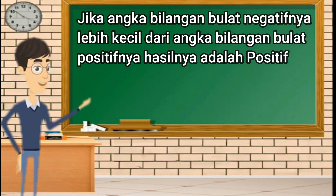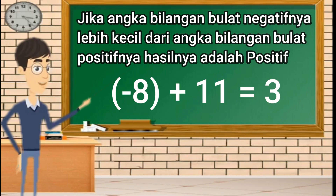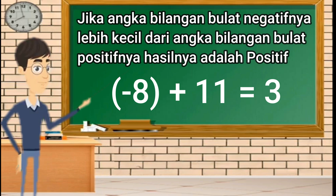Jika angka bilangan bulat negatifnya lebih besar dari angka bilangan bulat positifnya, hasilnya adalah positif. Contoh: negatif 8 ditambah positif 11 sama dengan 3, karena bilangan bulat negatif 8 lebih kecil daripada positif 11, maka hasilnya adalah positif 3.